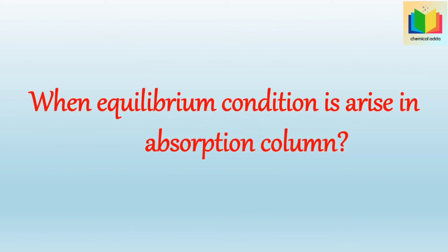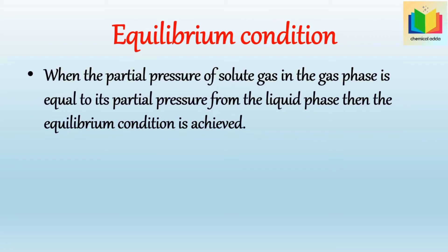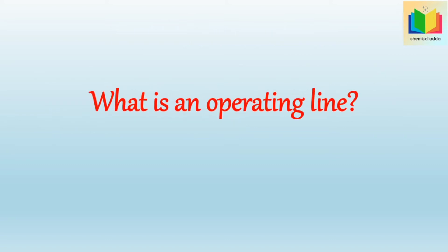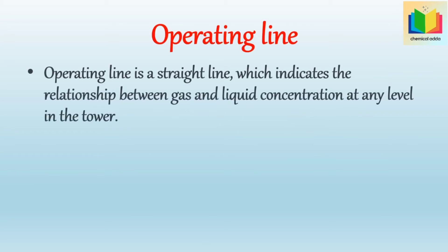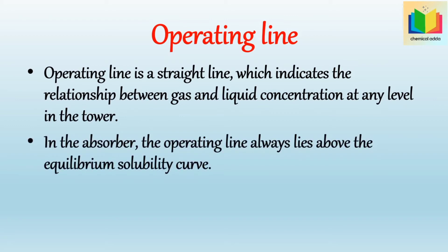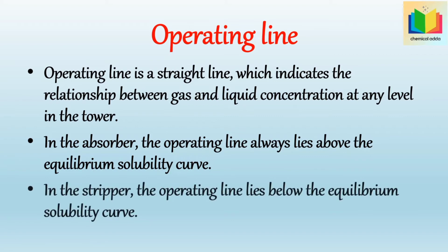When does equilibrium condition arise in an absorption column? When the partial pressure of the solute gas in the gas phase is equal to its partial pressure from the liquid phase, the equilibrium condition is achieved. The operating line is a straight line indicating the relationship between gas and liquid concentration at any level in the tower. In the absorber, the operating line always lies above the equilibrium solubility curve, and in the stripper, the operating line lies below the equilibrium solubility curve.